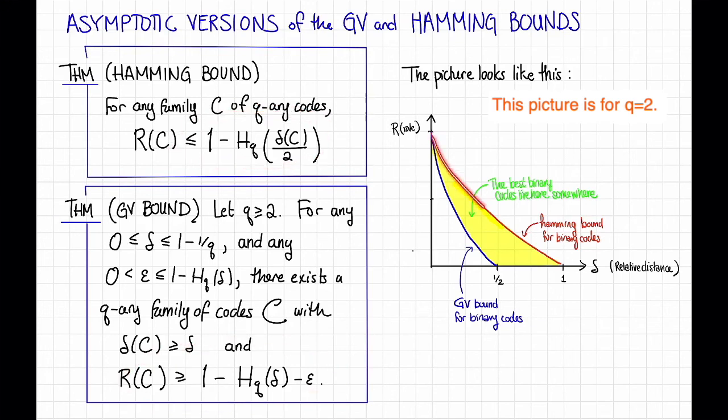So this red curve here, this is approximately the tradeoff that the Hamming bound gives us. I say approximately because, again, this is a hand-drawn cartoon, not an actual graph, but it looks something like this.